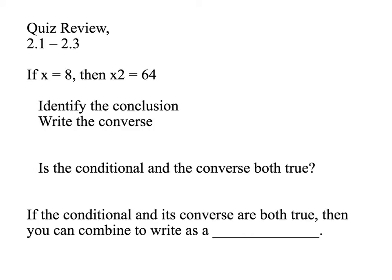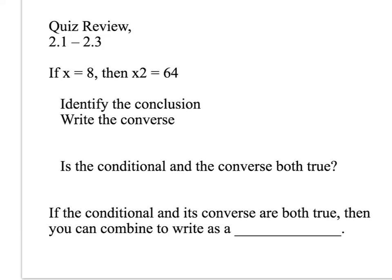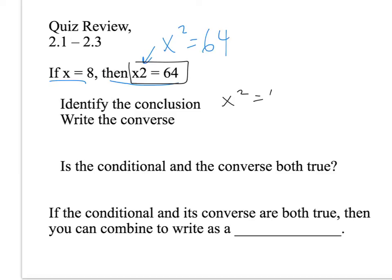So, the first type of problem: if x equals 8, then x squared equals 64. The conclusion is the part that follows the 'then,' so the conclusion is x squared equals 64.